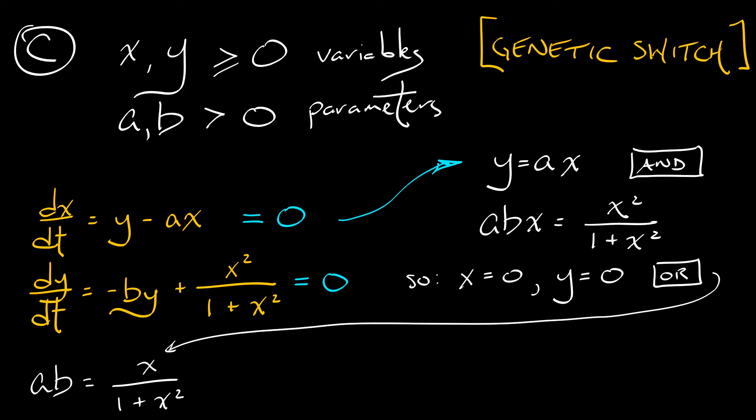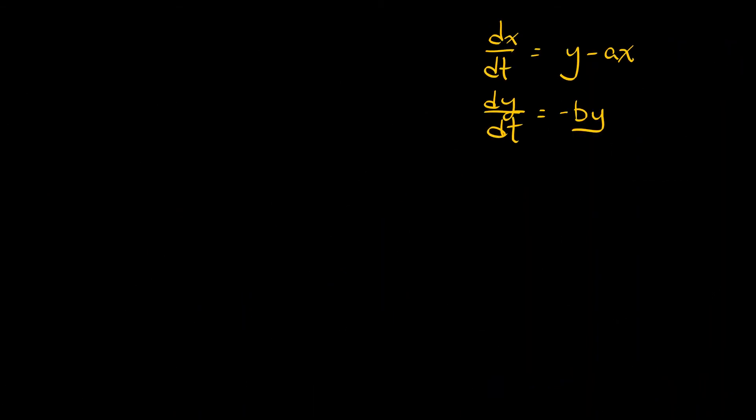Multiplying through by 1 plus x squared gives us the quadratic polynomial. abx squared minus x plus ab equals zero. That means it's time for the quadratic formula.